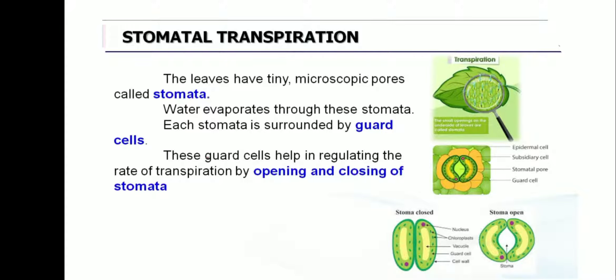The leaves have tiny microscopic pores called stomata. If water is lost from the plant through the stomata, it is called stomatal transpiration. An important point: 90 to 95 percent of water is transpired from the leaves only, which means most of the transpiration process occurs through stomatal transpiration.